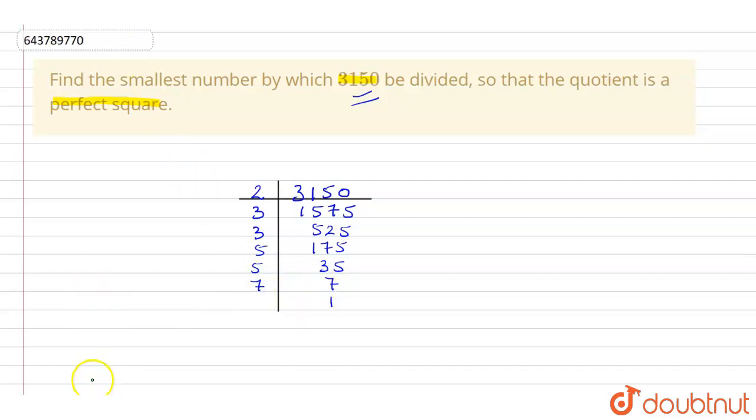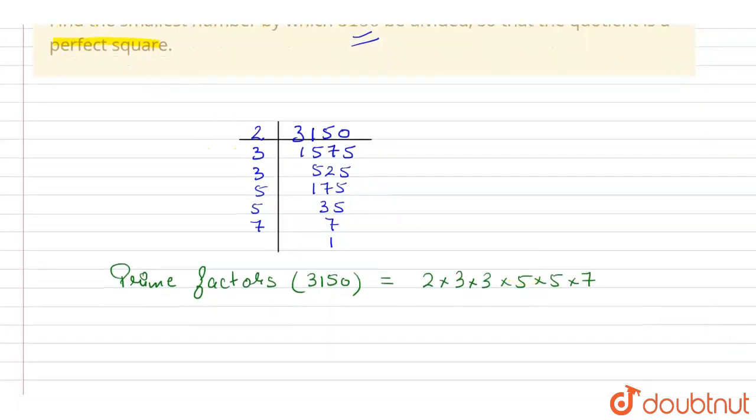So the prime factors of 3150 are 2 into 3 into 3 into 3 into 5 into 5 into 7. These are the prime factors of 3150.